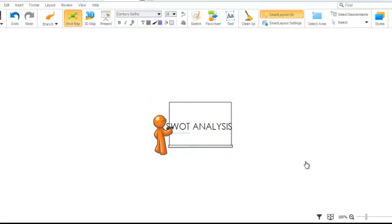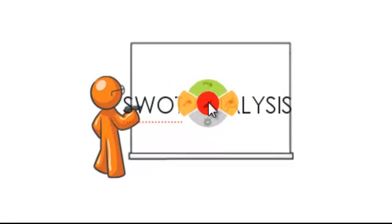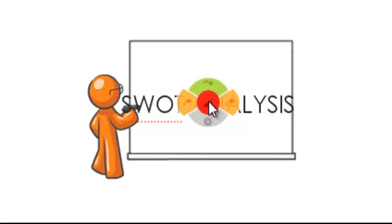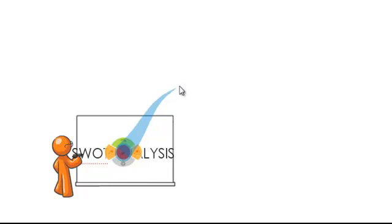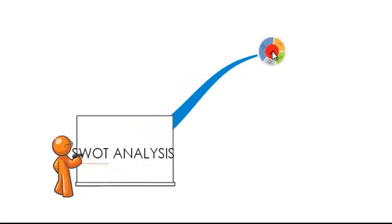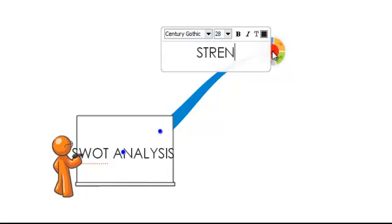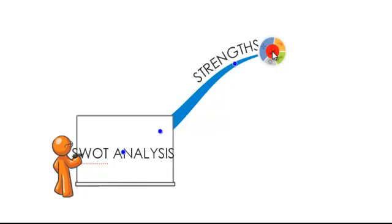Once we are ready to start building out the branches of our map, we hover over the central topic and see this target icon. If we click and hold the central part and drag our mouse outwards, you can see our first branch taking shape. To add text to this line, simply start typing. As the first branch on our SWOT Analysis map, this topic is labelled Strengths.